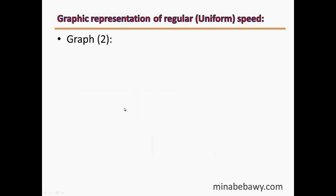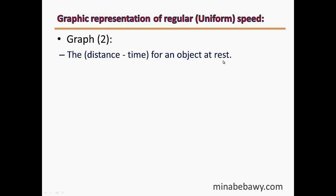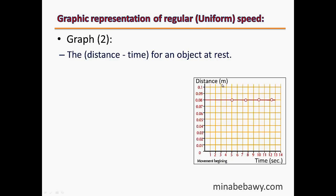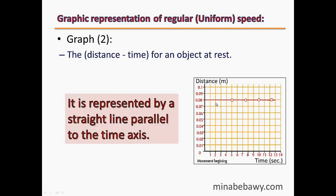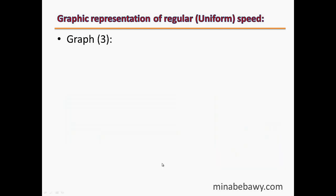The second graph is called the distance-time graph for an object at rest. At rest means it doesn't move — its velocity is zero. We have distance in meters over the y-axis and time in seconds over the x-axis. As time increases, the distance remains constant, because the object is at rest. This graph is represented by a straight line parallel to the time axis.